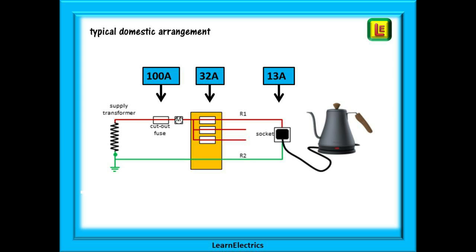Look at this very basic example. We have a typical domestic arrangement. A 100 amp main fuse protects the installation. A 32 amp breaker feeds a socket circuit and the kettle has a 13 amp fuse installed.